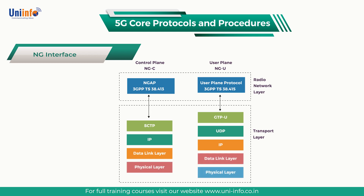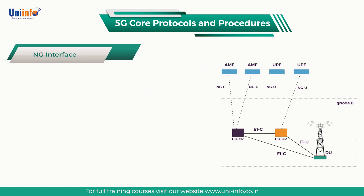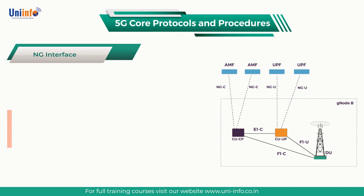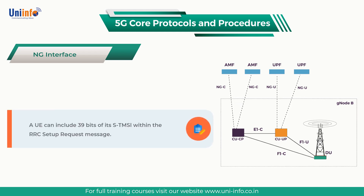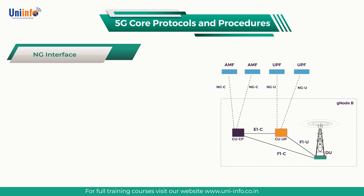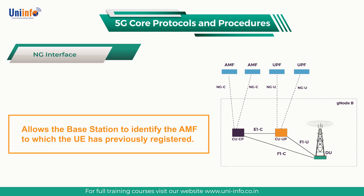The transport layers are the same as those used for the XN interface. A single base station can be connected to one or more AMF. The base station is responsible for selecting an initial AMF using its non-access stratum node selection function. The 5G S-TMSI can be used as an input for AMF selection if provided by the UE during RRC connection setup. A UE can include 39 bits of its S-TMSI within the RRC setup request message and the remaining 9 bits within the RRC setup complete message. The S-TMSI is a concatenation of AMF set identity, the AMF pointer, and the 5G TMSI. This information allows the base station to identify the AMF to which the UE has previously registered.